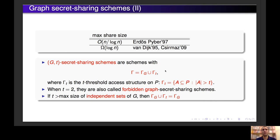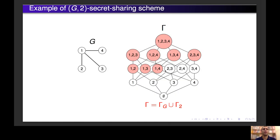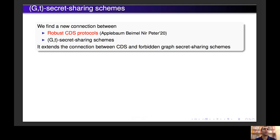Now we will see how we got the upper bound on the share size for almost all graphs. This is an example of G2 secret sharing schemes — G is the same graph as before, and this is the access structure of G2 secret sharing schemes. The access structure is the same except for one set that is now authorized because we took T = 2, so every subset of size ≥ T is authorized. In order to find our upper bounds, we found a new connection between robust CDS protocols — a primitive introduced by Applebaum, Beimel, Nir, and Pete recently — and GT secret sharing schemes. This connection extends the prior connection between CDS and forbidden graph secret sharing schemes.